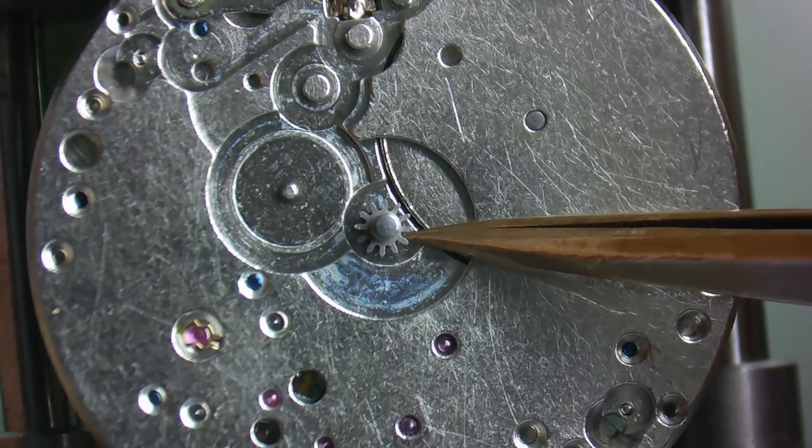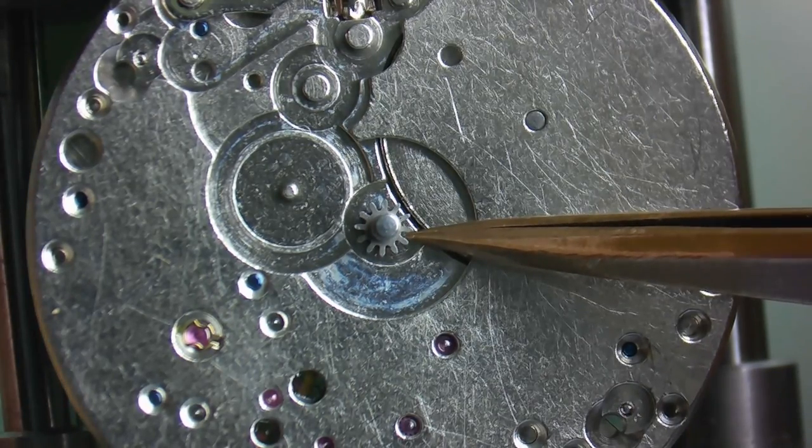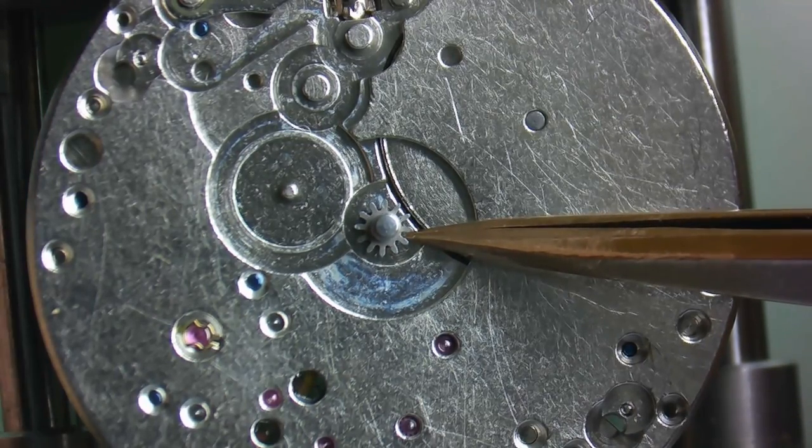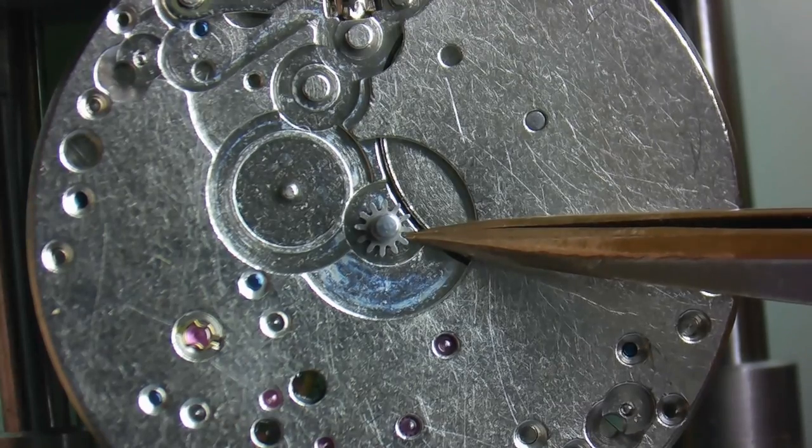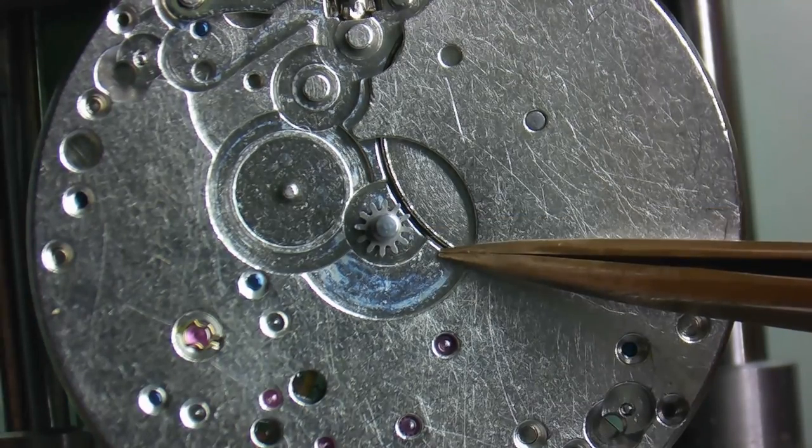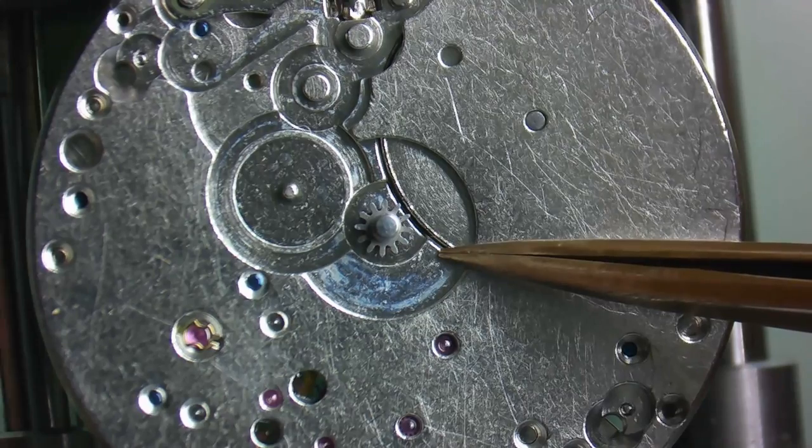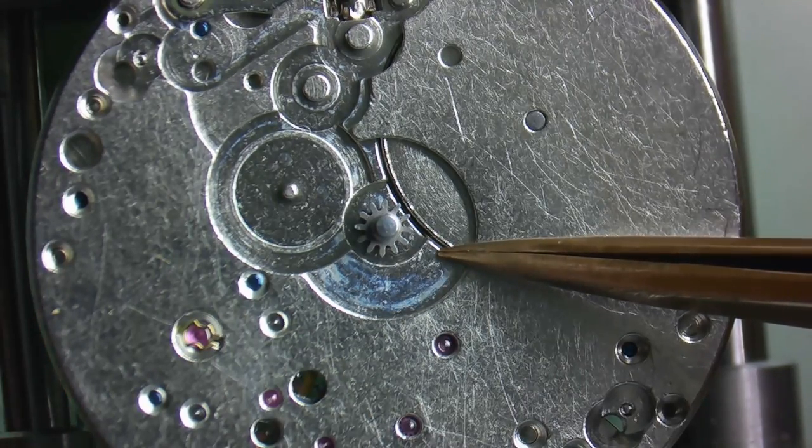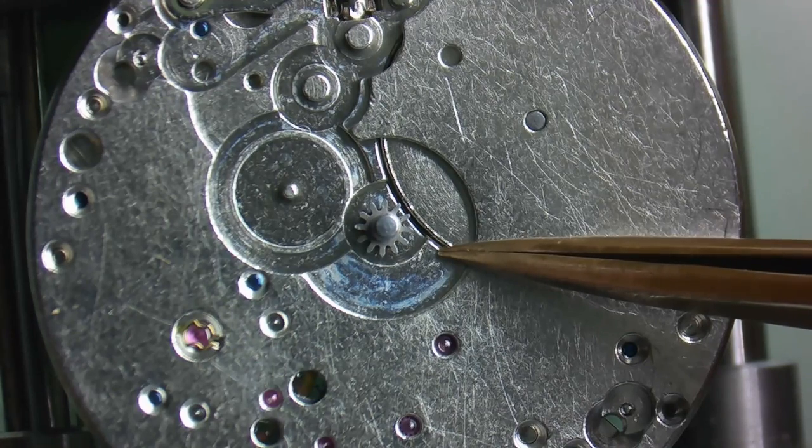But it also needs to be free enough to allow the hands to be turned manually without damaging the powertrain or the escapement. Now when you're assembling the motion works, always press the cannon pinion on first so that you don't end up damaging the teeth on the minute wheel.